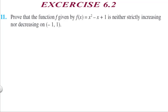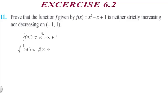Question 11: We have to prove that f(x) = x² - x + 1 is neither strictly increasing nor decreasing on the interval [-1, 1]. Differentiating, we get f'(x) = 2x - 1. Setting it equal to 0, we get x = 1/2.